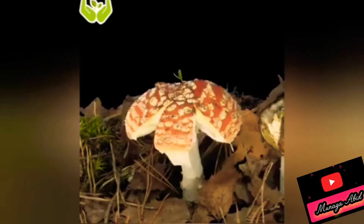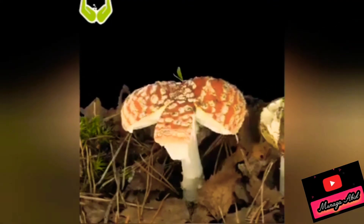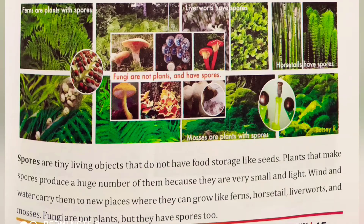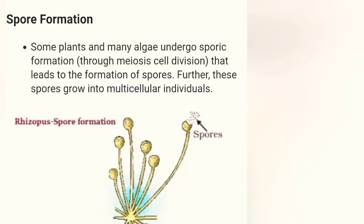To recap our most important concept: spores are tiny living objects that do not have food storage like seeds. Plants like algae, fungi, liverworts, mosses, and ferns produce spores.